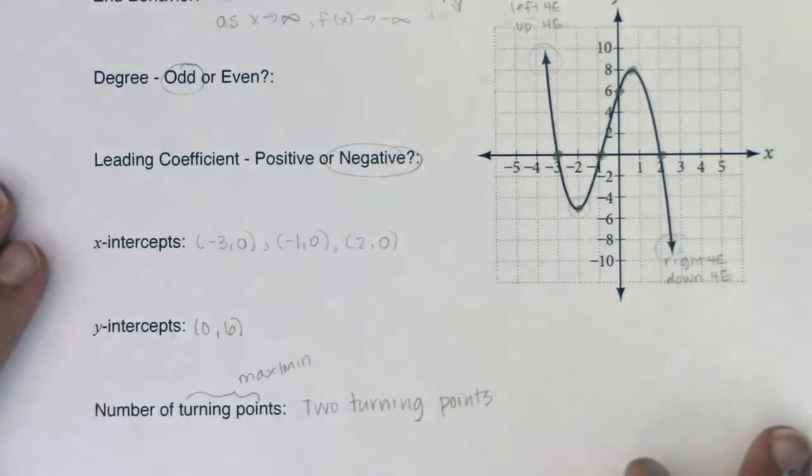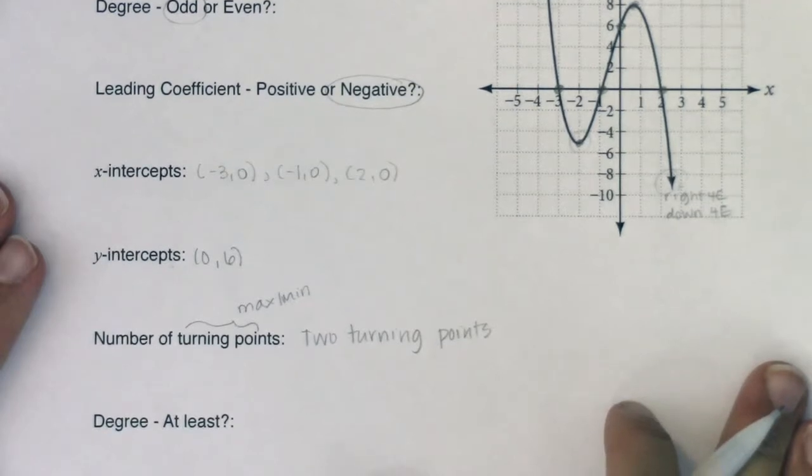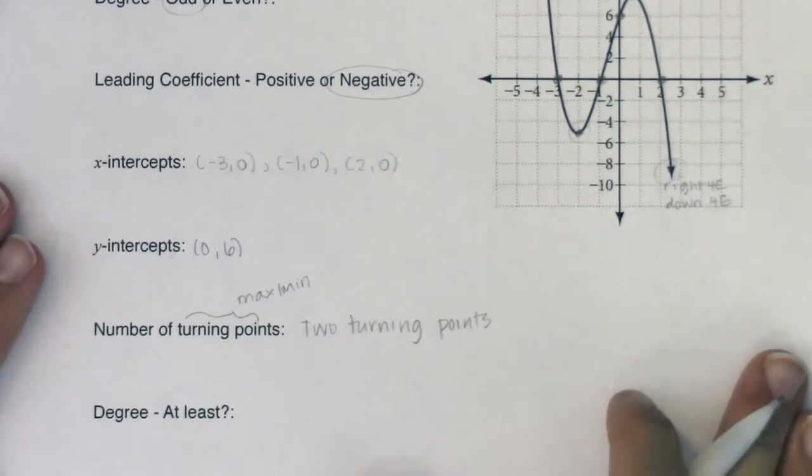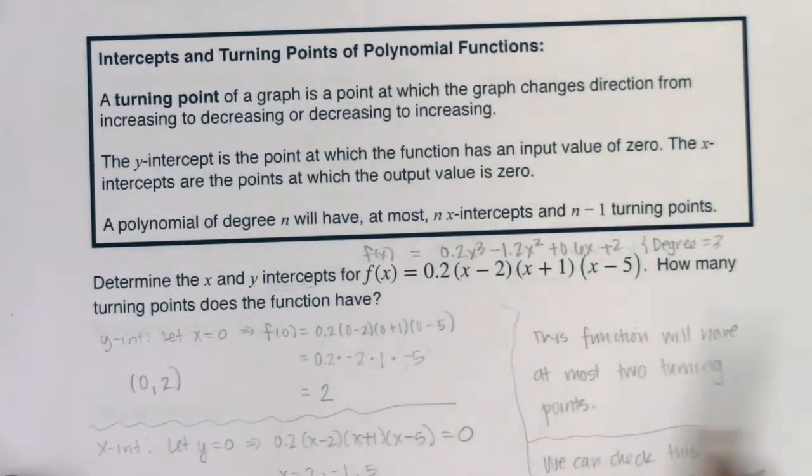Now, when you have two turning points, let me scooch this up just a little bit more. When you have two turning points, what degree polynomial do you have? At least what degree? Well, if we go back to that box that was a couple pages ago, let me go grab it. If we go back, actually, it wasn't a couple of pages ago. It was one page ago.